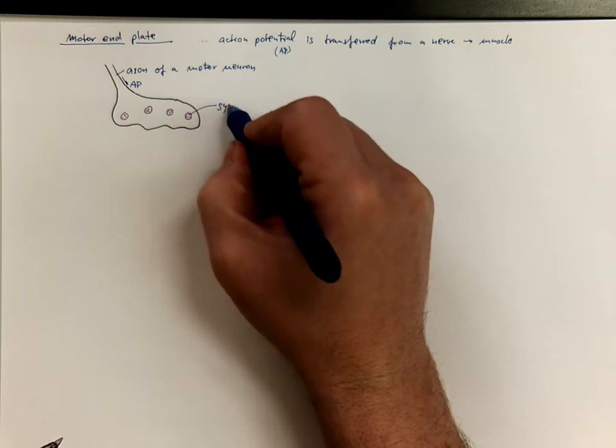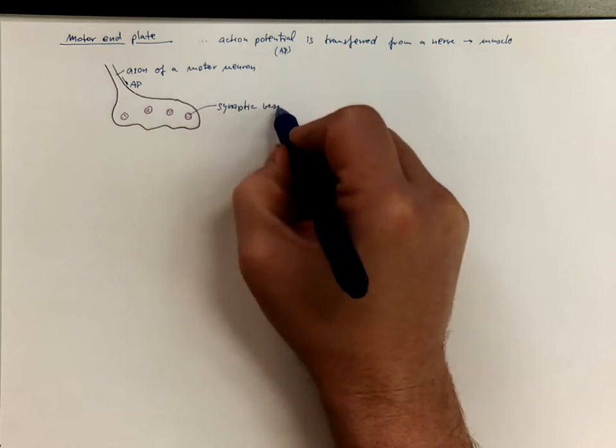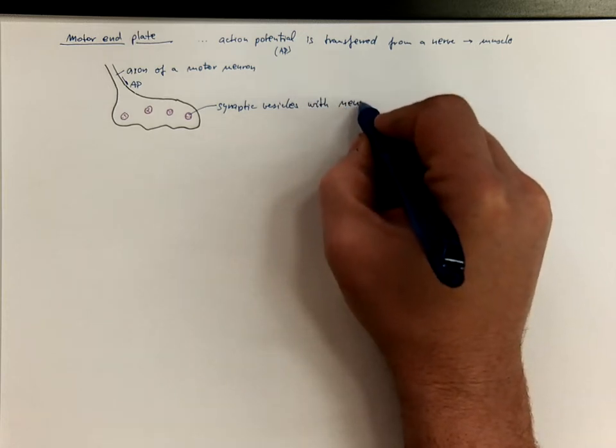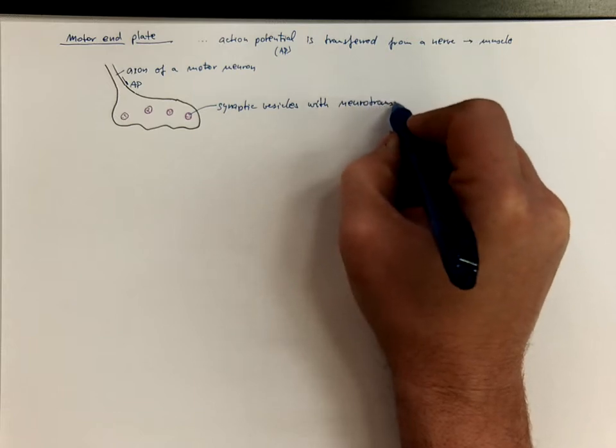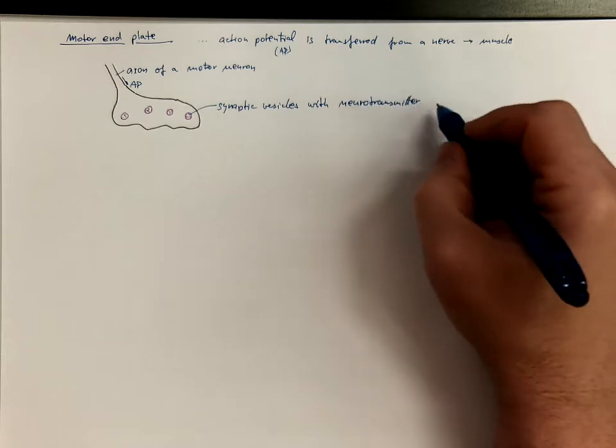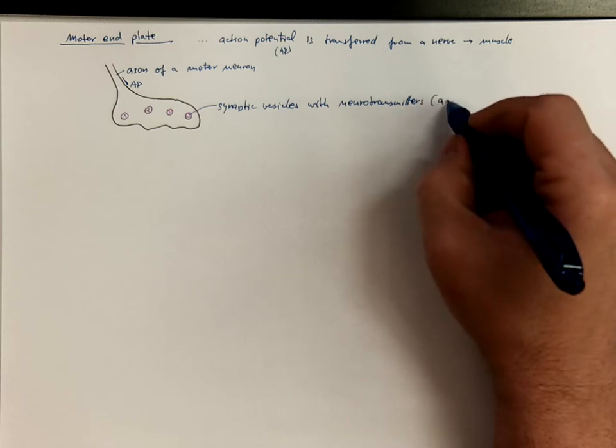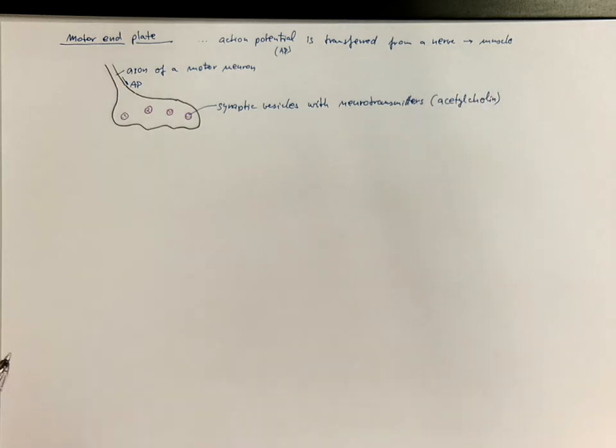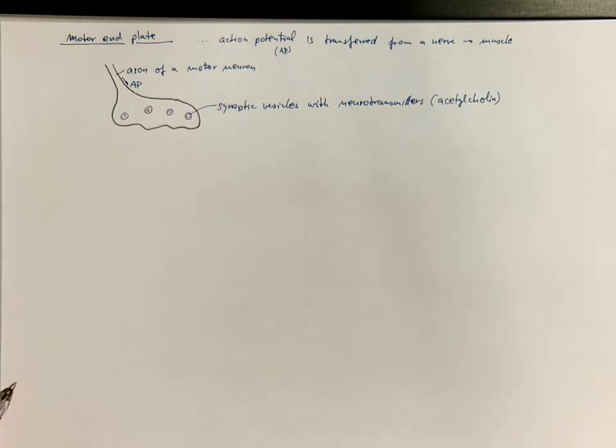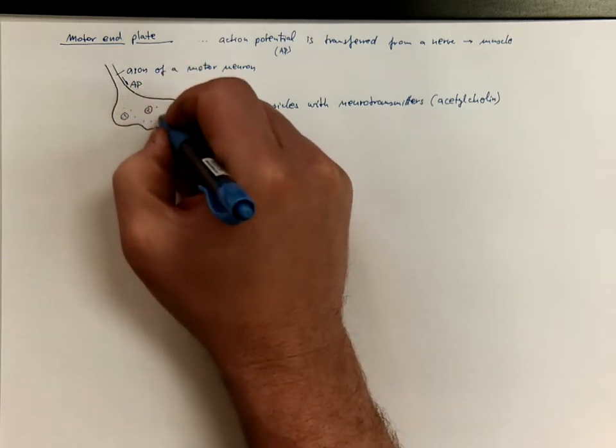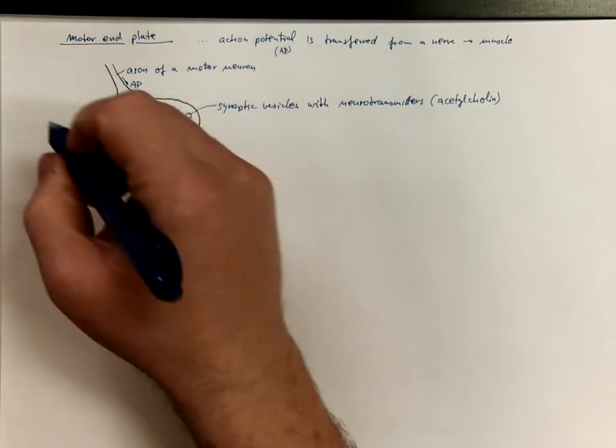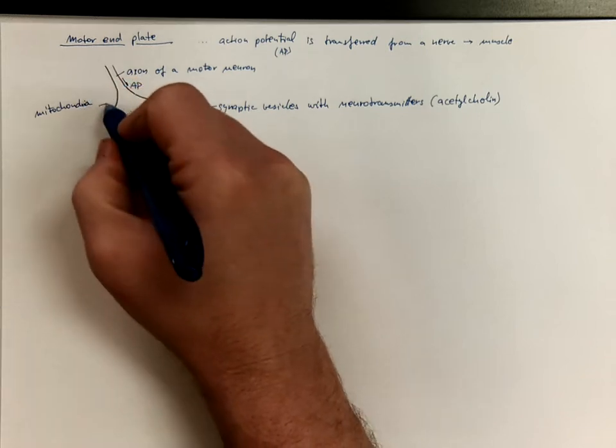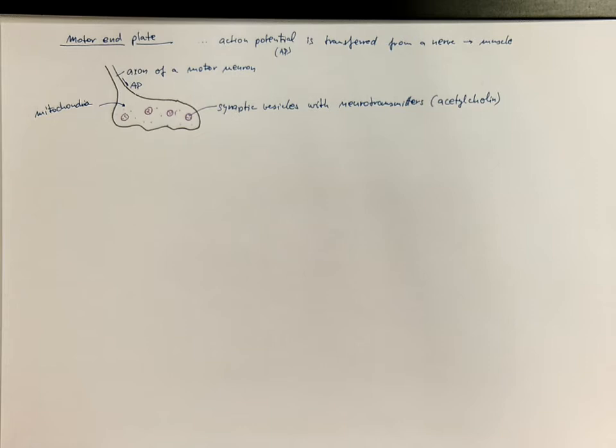So these are synaptic vesicles with neurotransmitter, and in this case the neurotransmitter name is acetylcholine. There are also mitochondria here producing energy for many active transport processes that occur here.